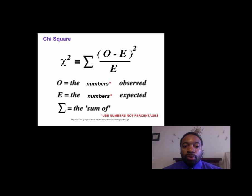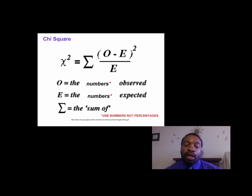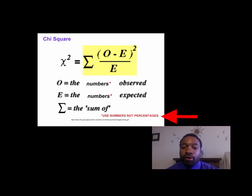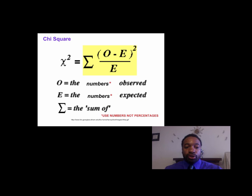Looking at the formula for the chi-square statistic, you can see that some parts are similar to percent error, like the observed and expected numbers. But in the chi-square, what we do is take the observed minus expected for each category, square it, divide it by the expected, and then add all those numbers together. Just like in percent error, we want to use numbers and not percentages, so our expected and observed values should be actual numbers.